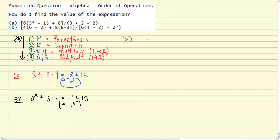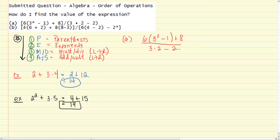Part A is 6 times the quantity 3 squared minus 1, plus 8, all over 3 times 2 minus 2. The division bar is really the central point of the expression, dividing it into two pieces, since each one is going to have its own set of parentheses.